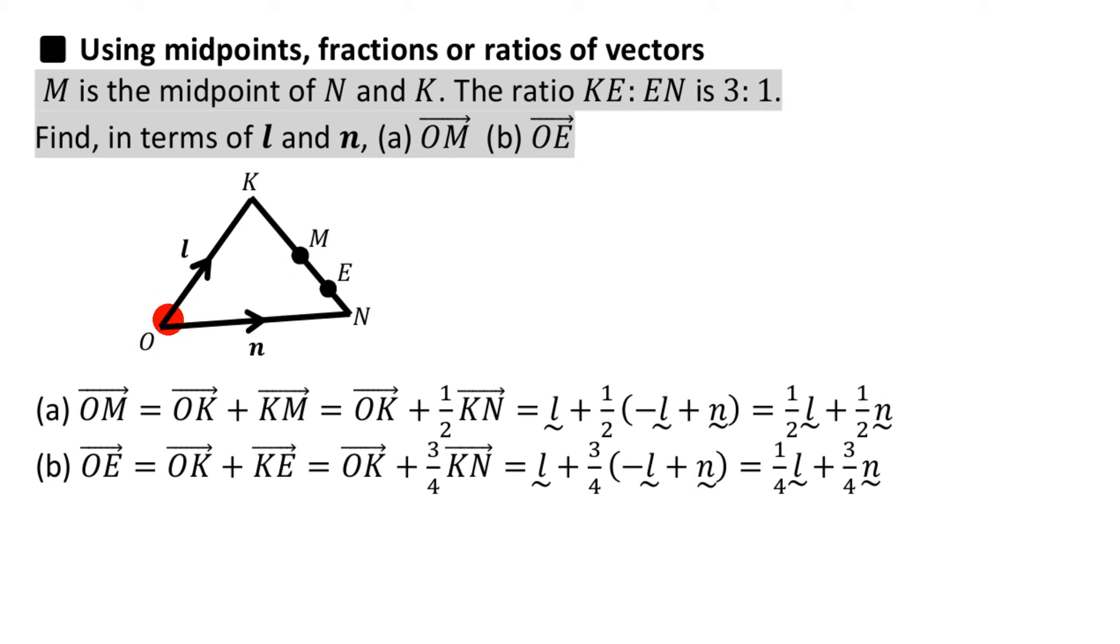O to M is that plus that. That is obviously L, and that is half of this bigger line. This bigger line K to N is really easy, is minus L plus N. So it's L plus half of minus L plus N, and that simplifies to this stuff there.